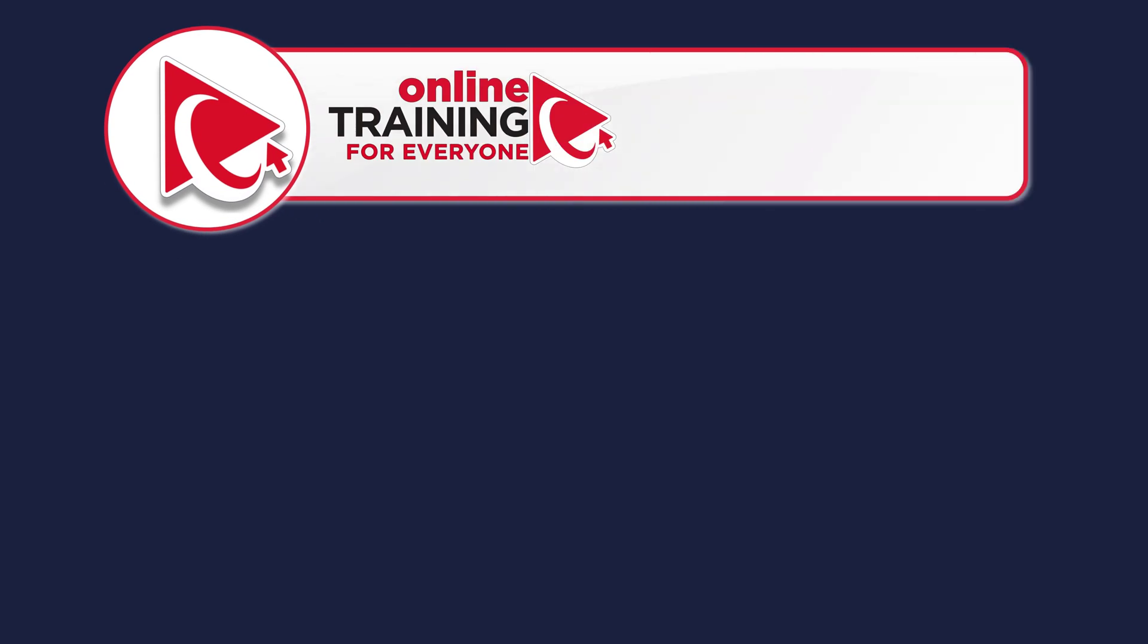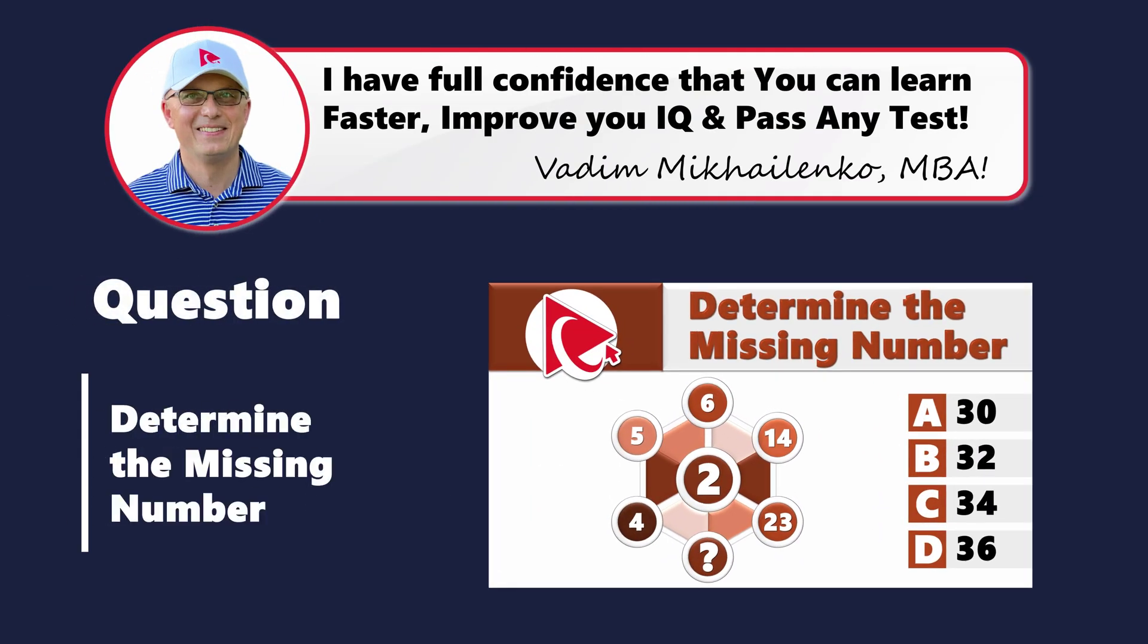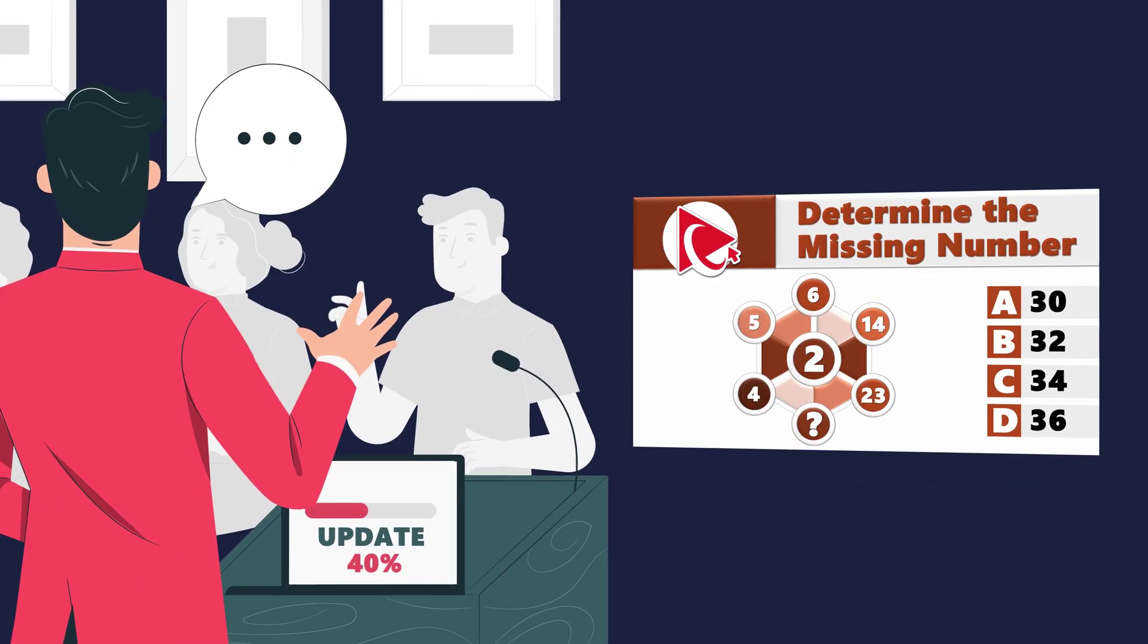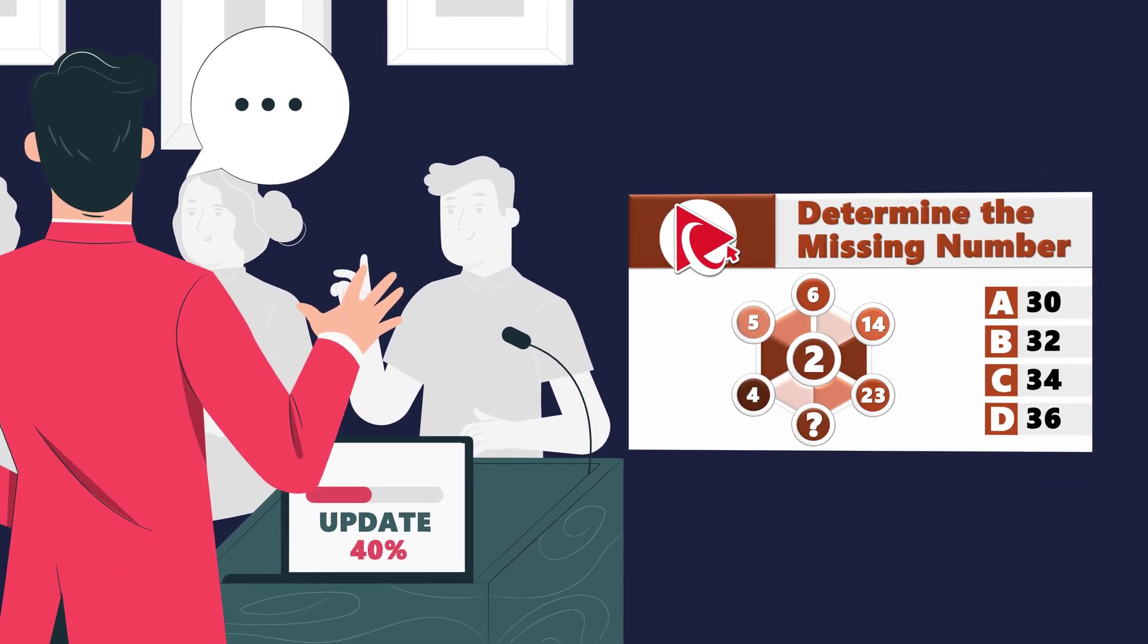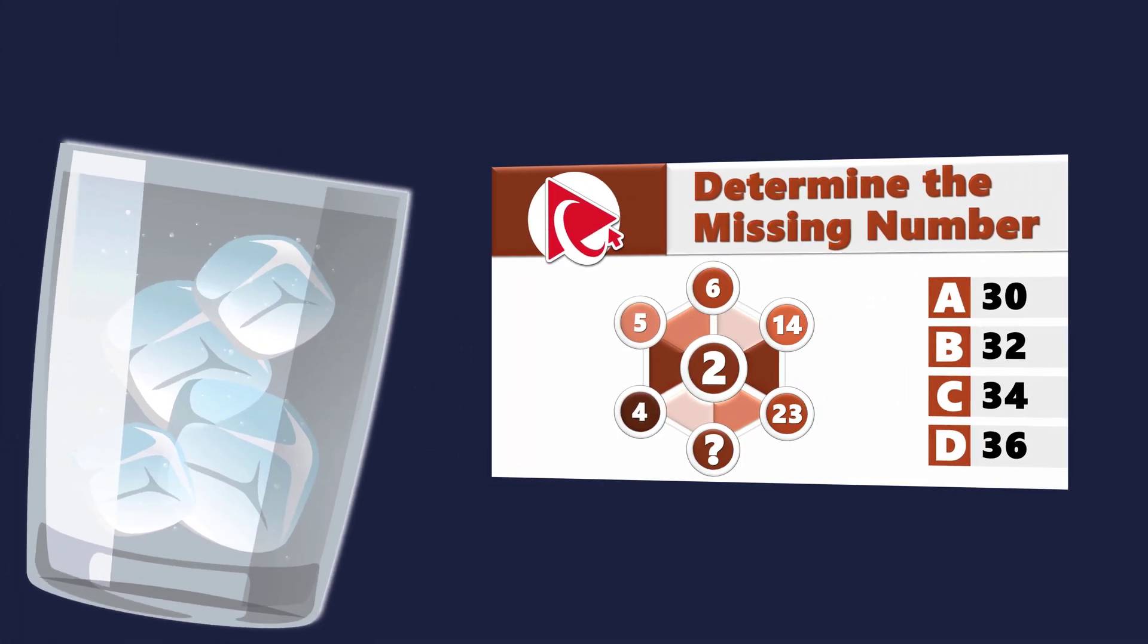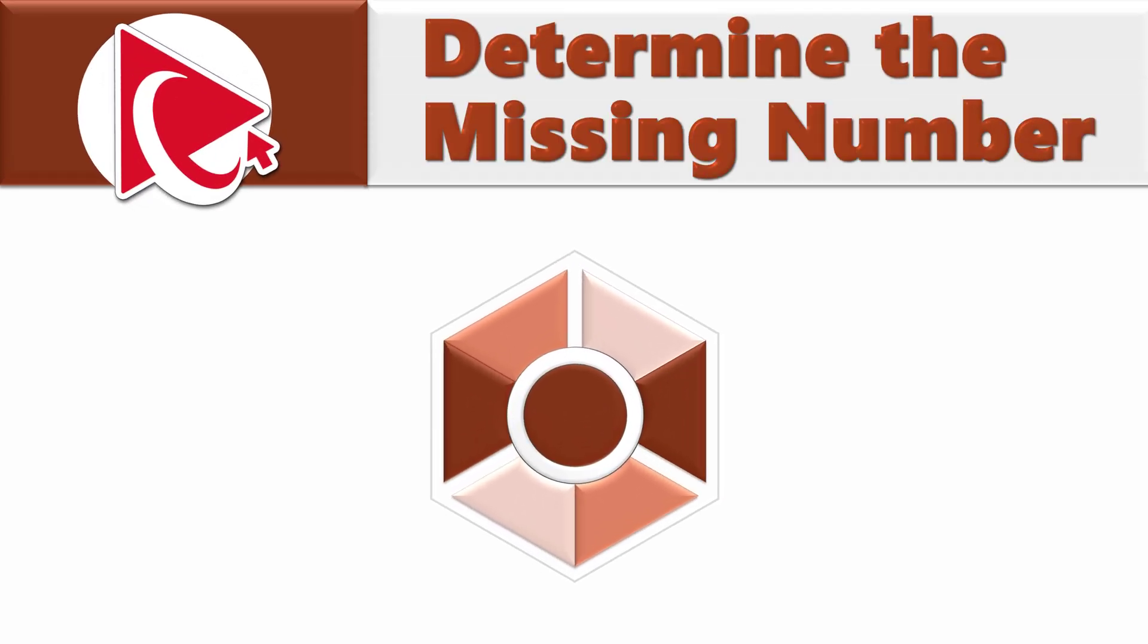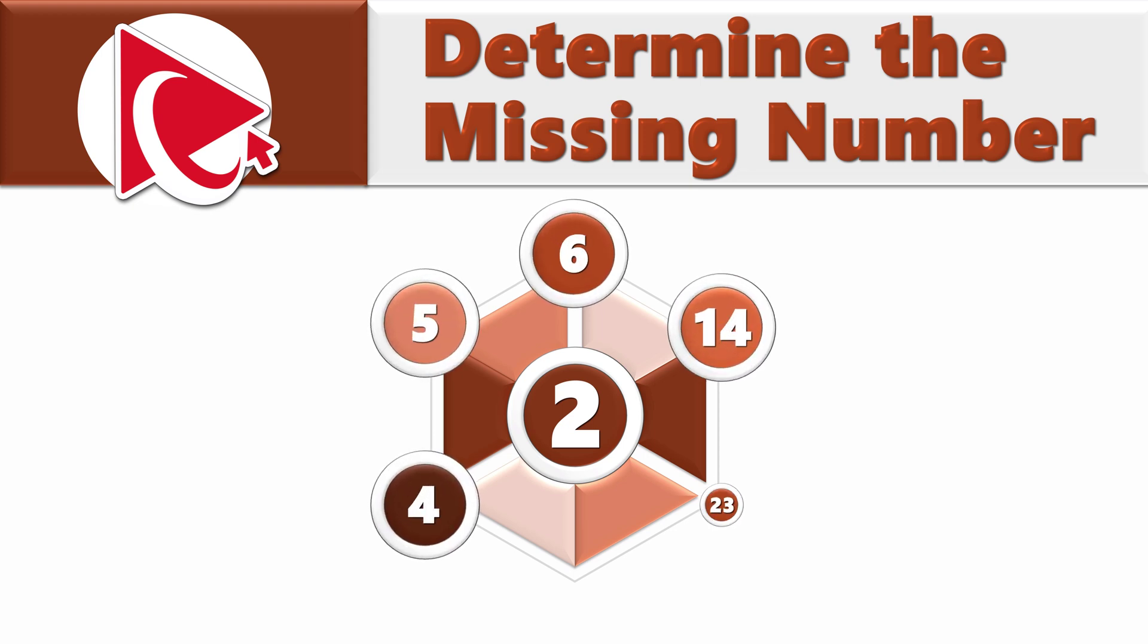And now it's your time to shine by solving this challenge. Keep in mind though that this puzzle can make your brain working overtime, like a computer trying to update during a crucial presentation. Your only hope would be to sip some ice water to avoid overheating. You're presented with a hexagon. Hexagon has number 2 in the middle and numbers 4, 5, 6, 14, and 23, followed by the missing number on the outside.